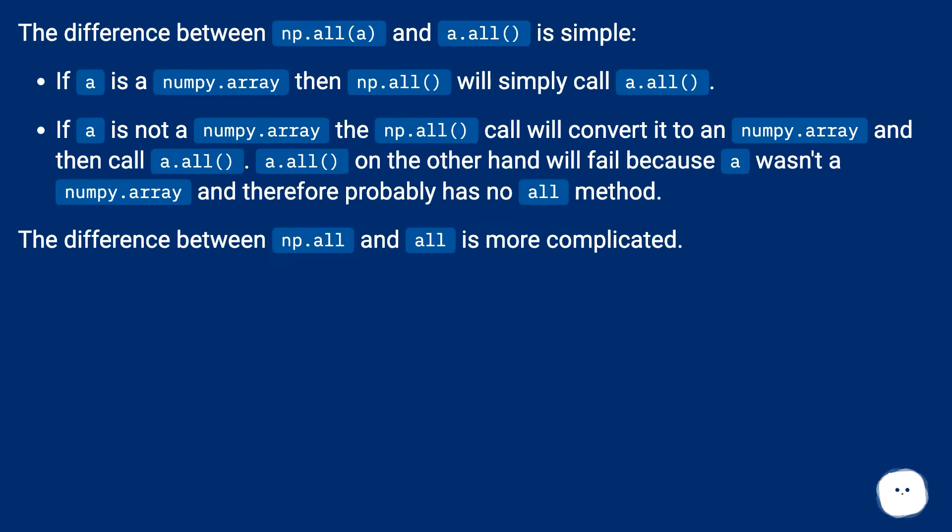If a is not a numpy.array, the np.all call will convert it to a numpy.array and then call a.all. a.all on the other hand will fail because a wasn't a numpy.array and therefore probably has no all method.